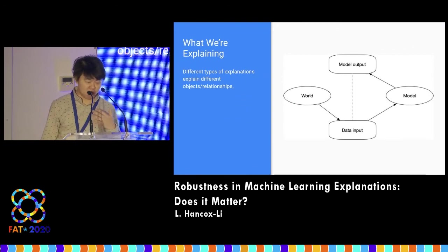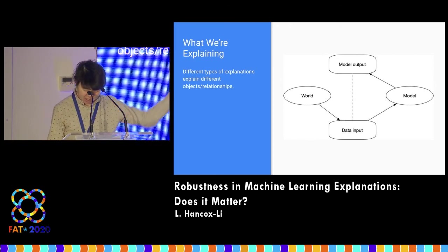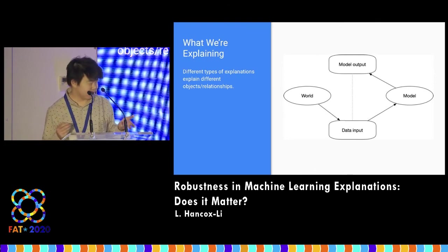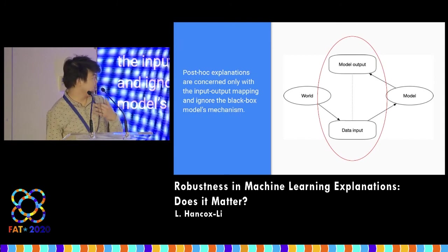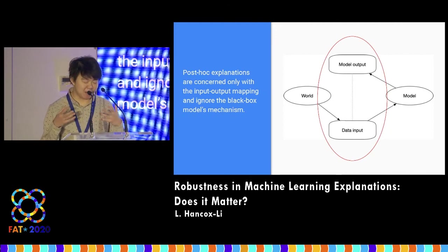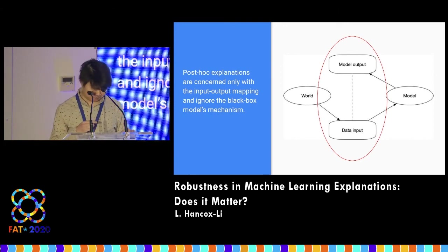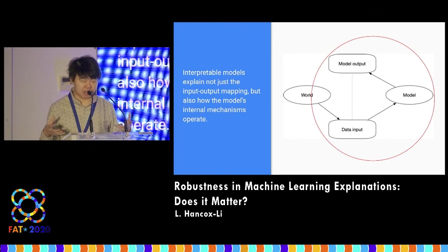Moving on to the question of what we're explaining: this is a schematic of the different objects or relationships we are trying to explain when we create an explanation. We have the world from which data is collected, and then the model which turns data input into an output. In the case of post hoc explanations, what's being explained is how the data input relates to the output, but without relation to the actual black box model. Most post hoc explanations, especially model-agnostic ones, can be applied without any relation to the black box model's internal mechanisms. In the case of interpretable models, we are explaining not just data input and its relation to model output, but also the internal mechanisms of the model — so we're explaining more things than in the post hoc case.